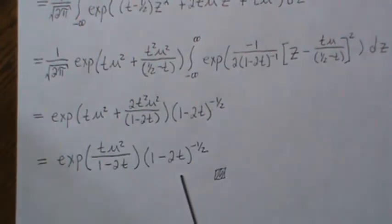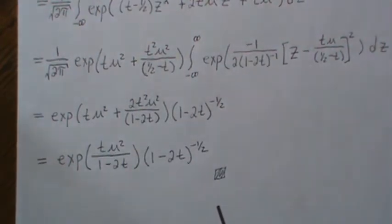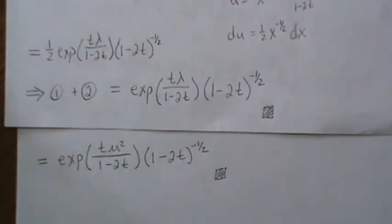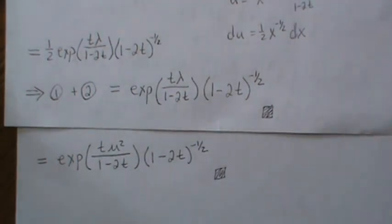So this is the moment generating function for one degree of freedom, non-central chi-squared. And that is exactly what we got using the other approach. Well, I hope you enjoyed that. I sure did. And like the video and subscribe so you don't miss the next one. Thanks. Bye.